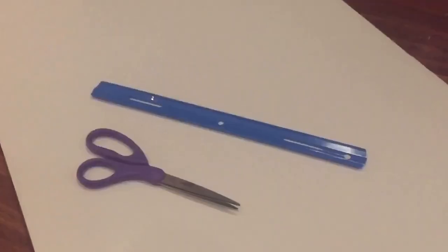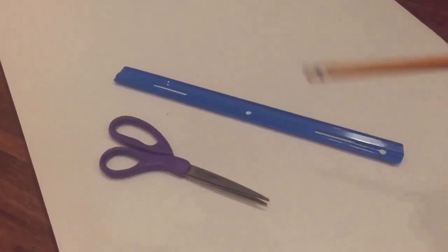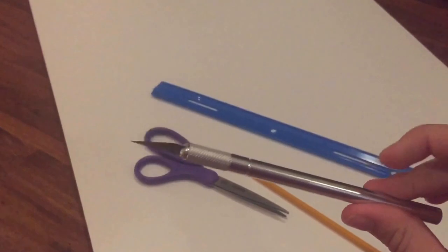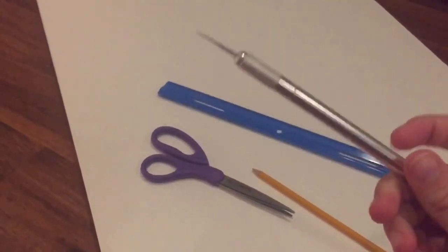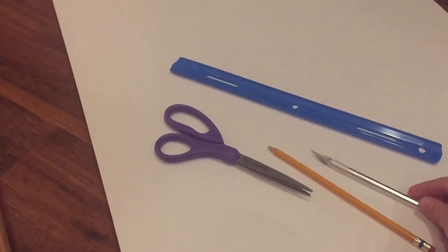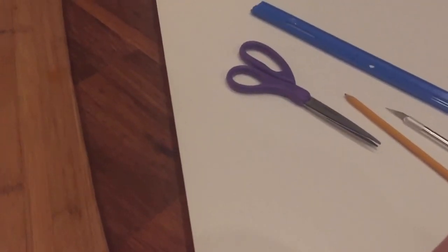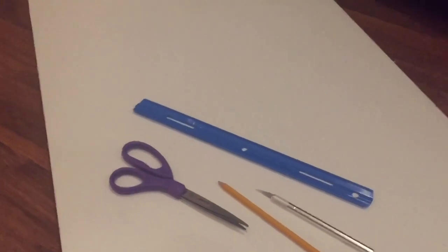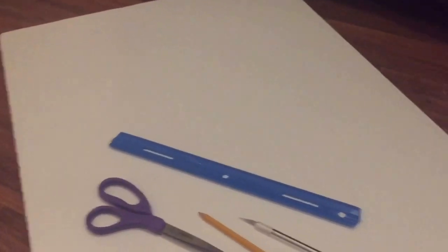You also need some scissors. You'll need a pencil just for some markings of measurements, and then you're gonna need an exacto knife or a utility knife. I went ahead and picked this one up at Walmart. I believe it was three dollars. Then you're gonna need a cutting board or some kind of surface that you can cut with the exacto knife because it's sharp and it will scratch whatever's underneath. Another thing that you will need that I do not have present with me because it is currently hot is a glue gun.